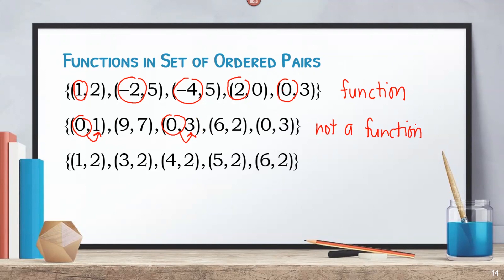On the third example, we see that the values of x are distinct — we have 1, 3, 4, 5, and 6. Although they are paired to only one value of y, remember the definition of function: the restriction is only for the x value. Therefore, this set of ordered pairs is a function.